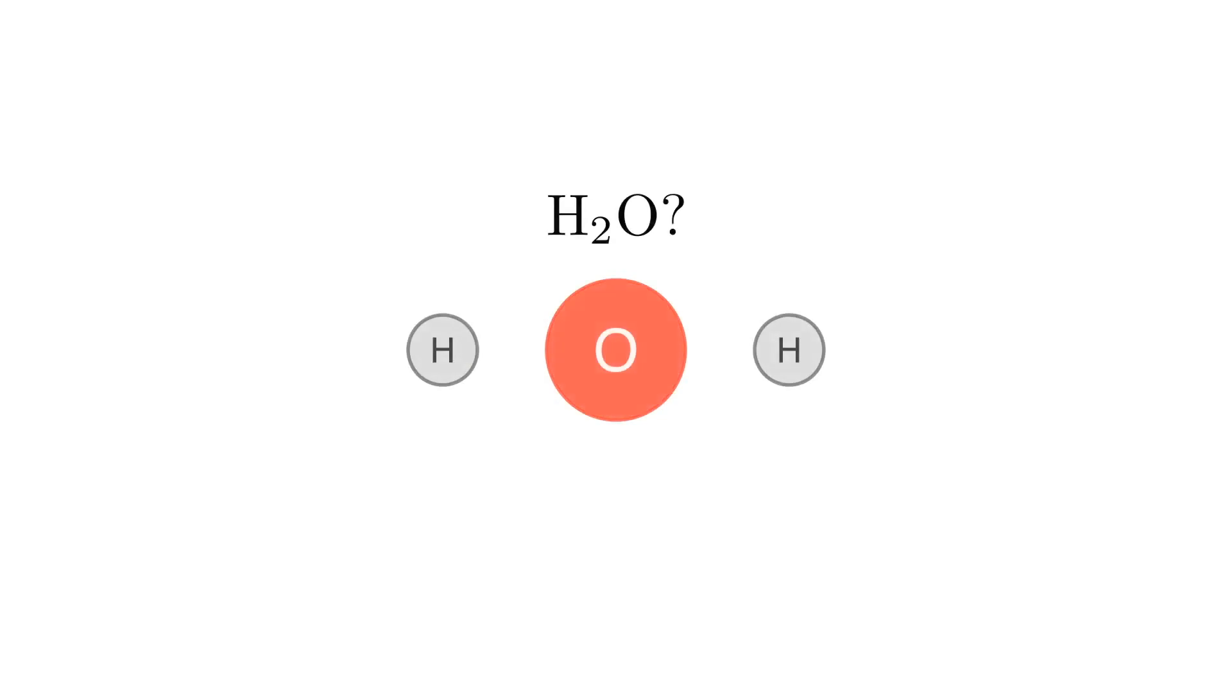Now if we look at a water molecule, intuitively we'd think that there would be an oxygen in the middle with two hydrogen atoms on either side. But this isn't the case. Why is this?